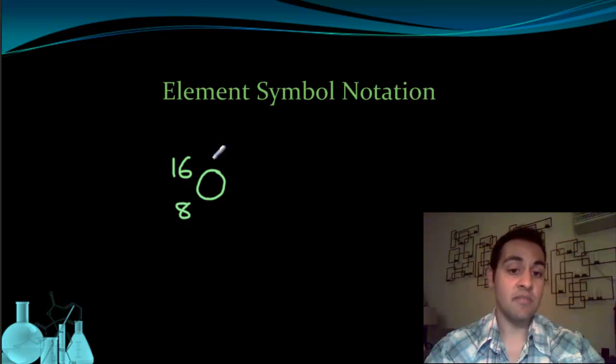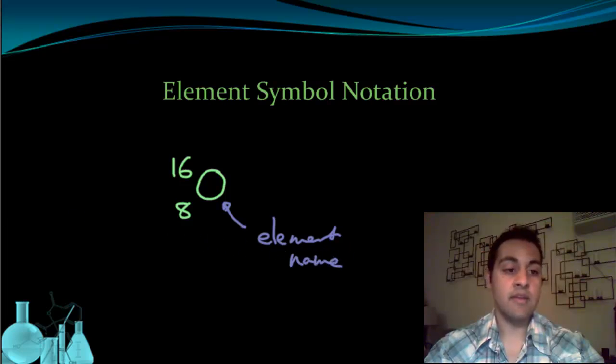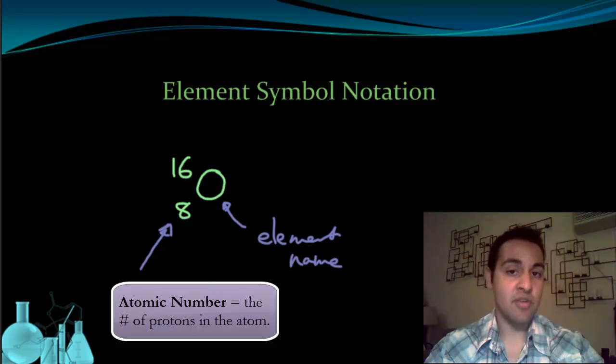Now let's talk about what these parts mean. So the first thing is that this O tells us what the element is, the element name. The symbol gives us the element name. Next, we have this component, the 8. The 8 is called the atomic number. It tells you the number of protons in this atom. That's the single determining factor in what element it is. Every single atom of oxygen has 8 protons in it. If it had 9 protons, it would be a different element. If it had 7 protons, it would be another element. So the number of protons is the single determining factor in what element you have.